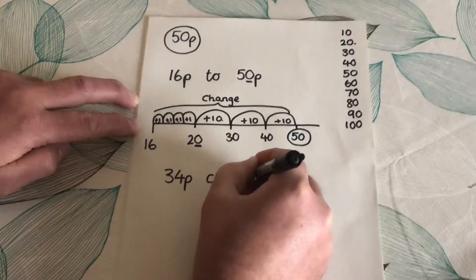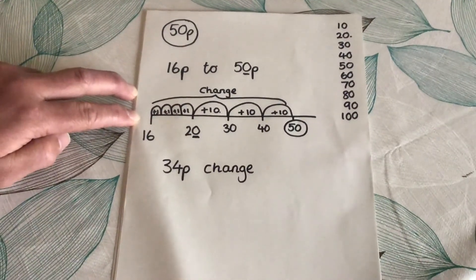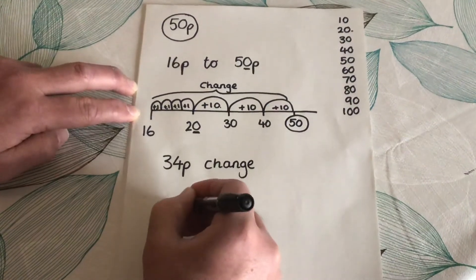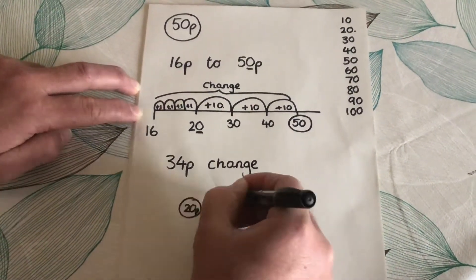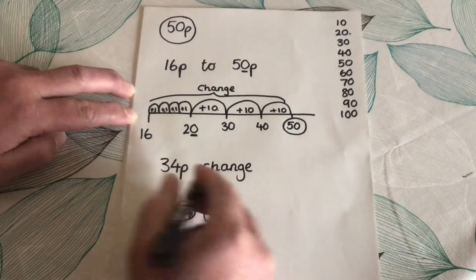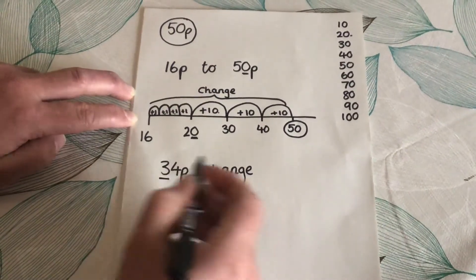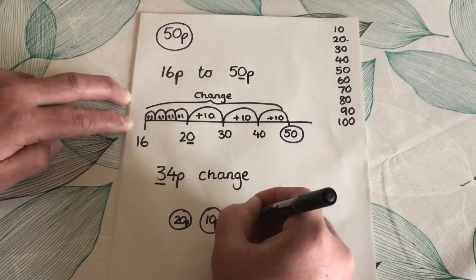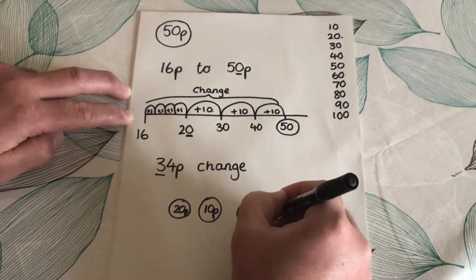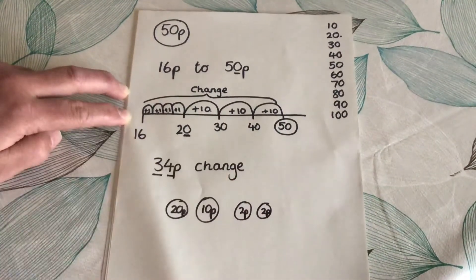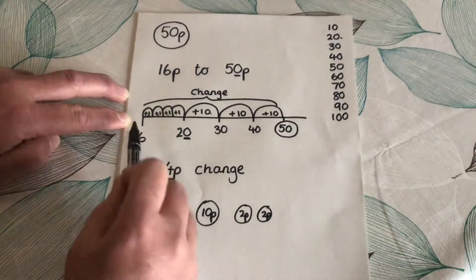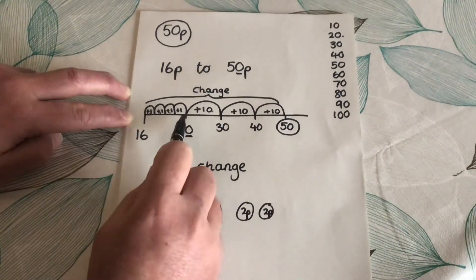What coins could he get if he got 34 pence change? Well, he could have a 20p and a 10p — that makes 30. And then he could have two 2p coins — that would make the four. So that's how we find change by jumping on in ones then tens.